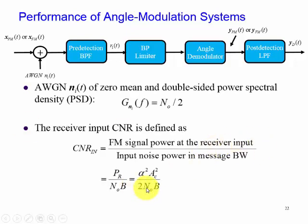And the noise power is N₀B, since this is going to be double-sided when we multiply this height by 2 with the width of 2B, hence we get N₀B. So the receiver input carrier-to-noise ratio is governed by this equation: α² Ac² divided by 2, which is the power in the carrier, divided by the noise power N₀B.